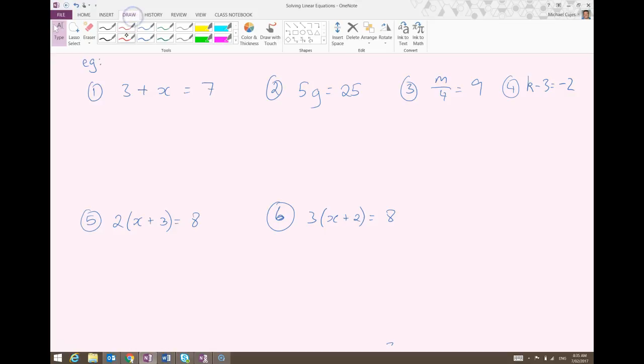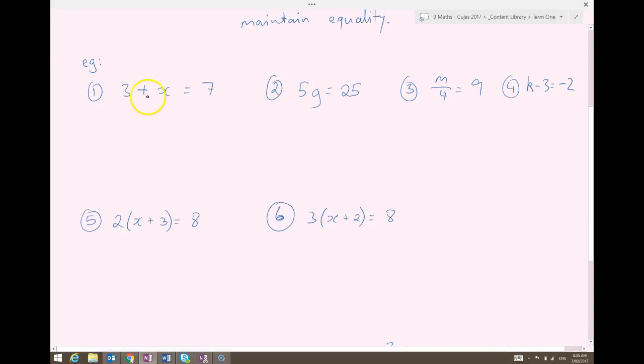So, here I have 3 plus x equals 7. 3 has been added on to x, the opposite of 3. The inverse of positive 3 is negative 3. So I just subtract 3 from each side.